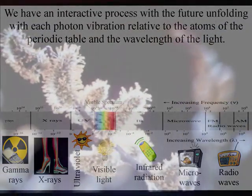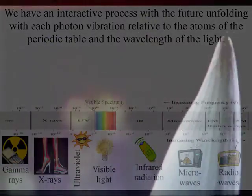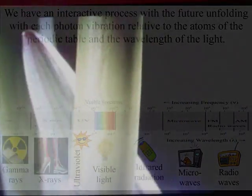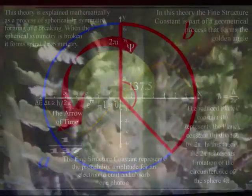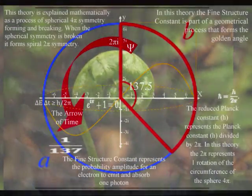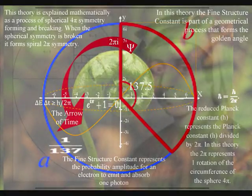In this theory, the fine structure constant, as part of a geometrical process, forms the golden angle and with it the Fibonacci spiral that we see almost everywhere in nature.